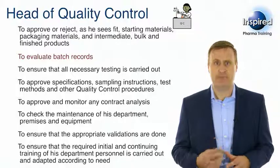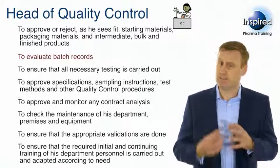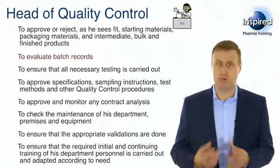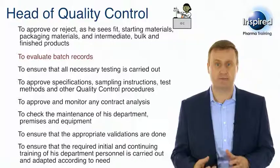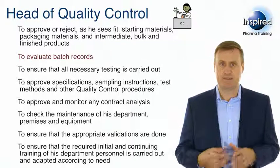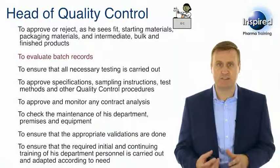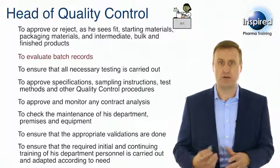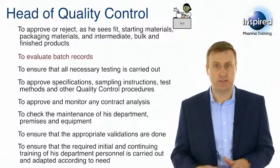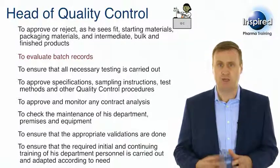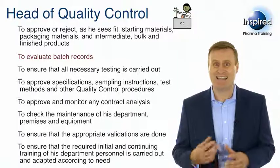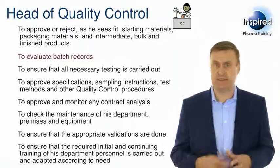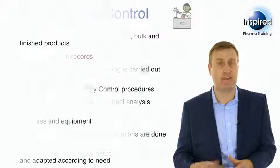Many of these tasks may not surprise you, but some might. In GMP, it is the Head of Production and then the Head of Quality Control who must evaluate batch records. Despite common incorrect assumptions, there is no mention in GMP of a QA manager or department, nor the requirement for a qualified person to review batch records. Of course, the Head of QC can delegate this task to a QA manager — most do — and a QP may choose to review batch records if they like.